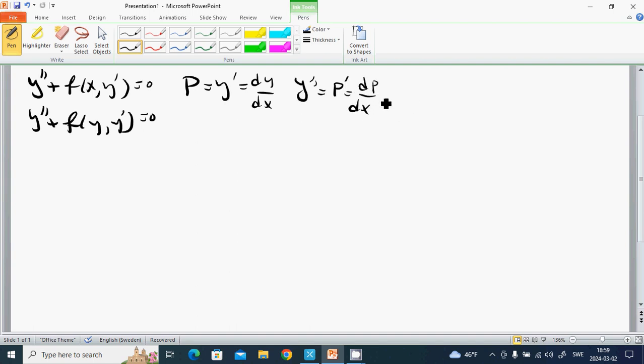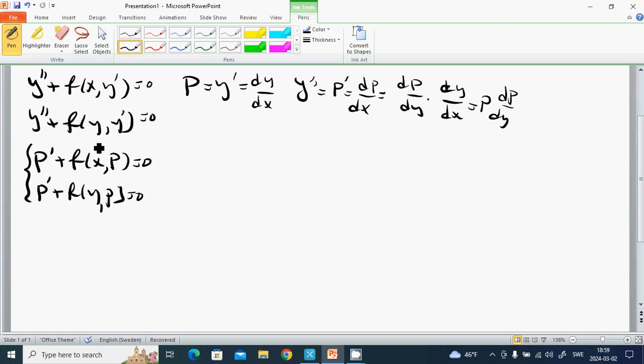Which can be written as dP/dy multiplied by dy/dx, which is P times dP/dy. When we use this, it becomes P prime plus f(x) times P equals 0, which we have seen the solutions for. F(y) and P equals 0, we have seen the solution and methods for this part. I am going through the example.